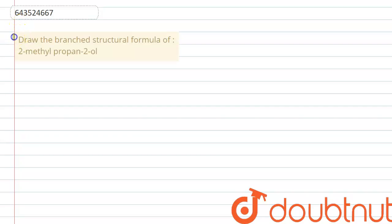Hello everyone, let's start. The given question says draw the branched structure formula of 2-methyl propan-2-ol. So let's start. The given compound is 2-methyl propan-2-ol.